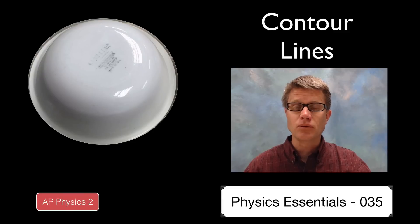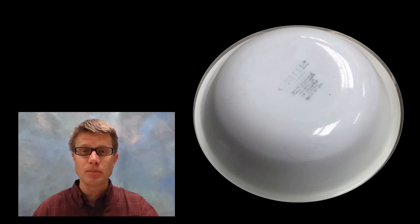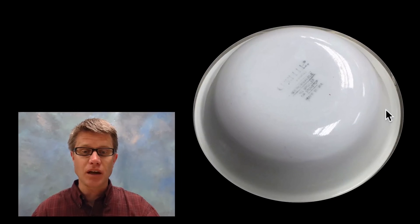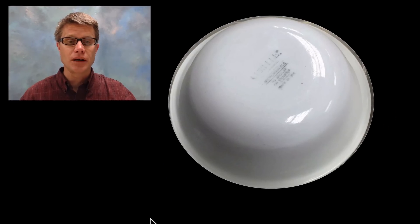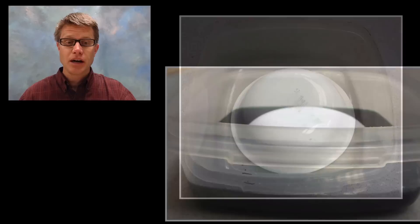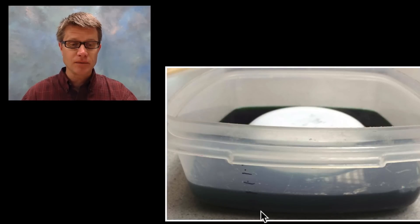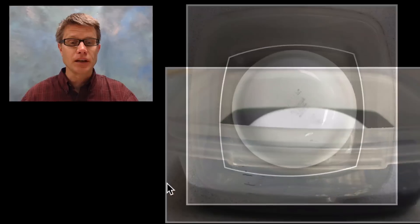So before we get to that — and we'll mostly get to that in the next video — take a look at this bowl. We have a bowl that's inverted, and I want you to have a mental picture of how this looks three dimensionally. It's got these steep sides and then it's going to be relatively flat on the top. So let me show you a quick activity I did to draw the contour lines. I put that bowl inside a little plastic tub and put markings on the side — markings of equal distance up the side — and I'm going to add water to it.